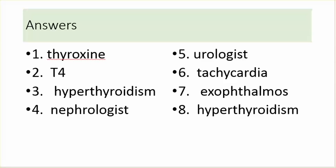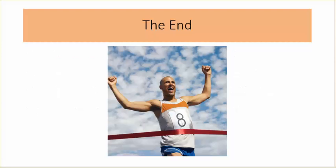Answers. Number 1 is thyroxine. Number 2 is T4. Number 3 is hyperthyroidism. Number 4 is nephrologist. Number 5 is urologist. Number 6 is tachycardia. Number 7 is exophthalmos. Number 8 is hyperthyroidism. The end.